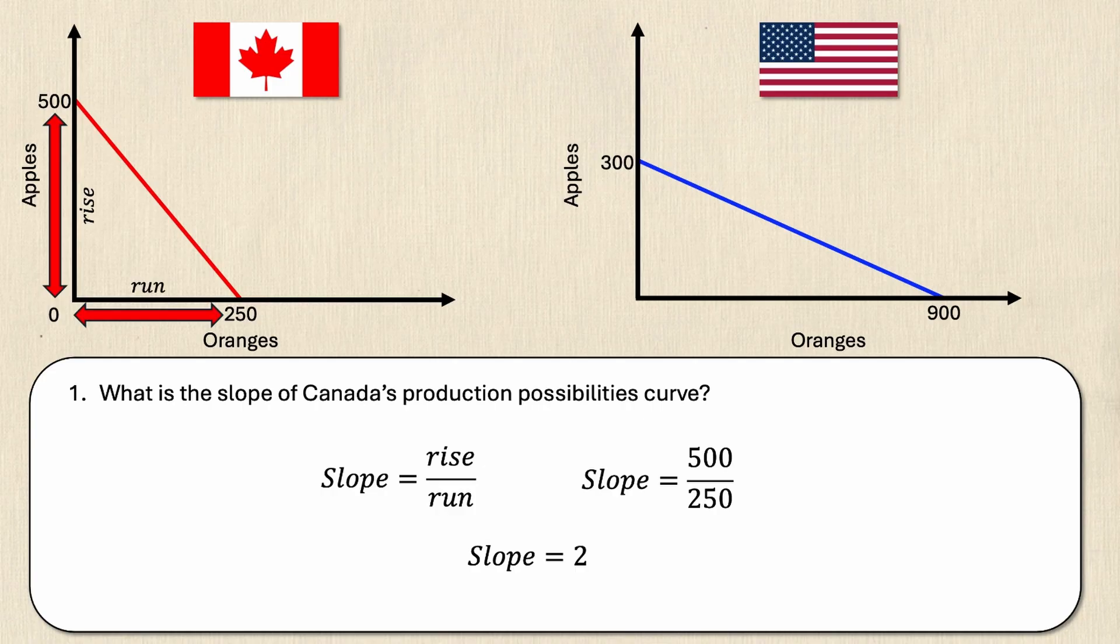Now the slope of the production possibilities curve is a rate. In fact the slope of any line is a rate, and the way that you would interpret this is that Canada can produce two apples per orange. Let's move on to the second question.